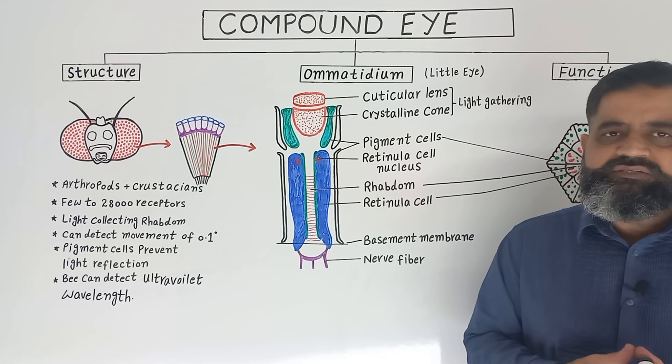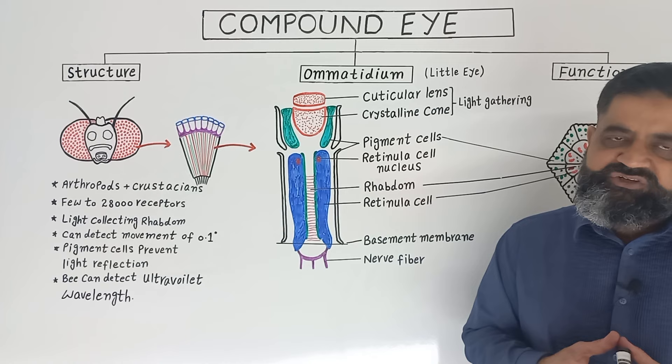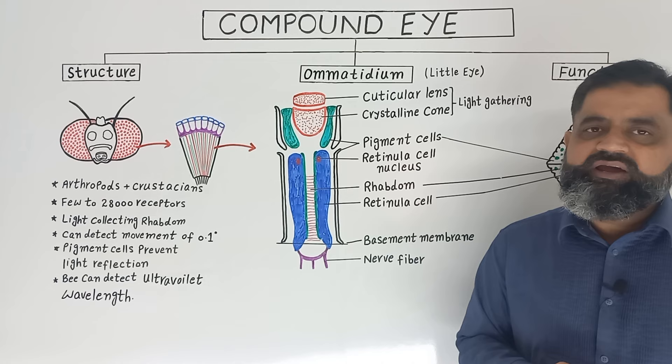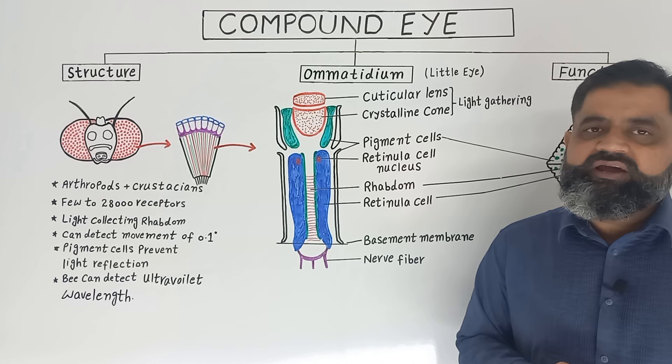These eyes are very helpful in honey bees, because honey bees can detect different types of flowers in different weather conditions such as rain, wind, or sunny days. Bees can even detect ultraviolet wavelengths of light, which the human eye or simple eyes cannot detect. That's all for today — hopefully see you in the next lecture.